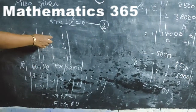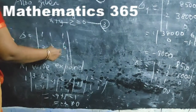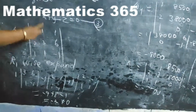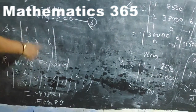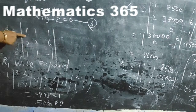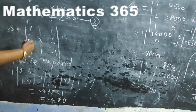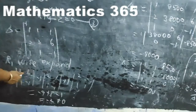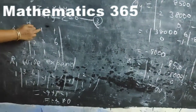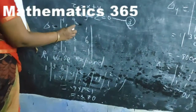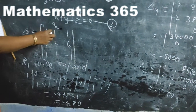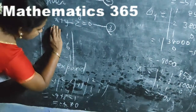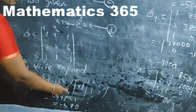Usually we expand along R1. It is plus 1 into the submatrix, removing that row and column: 3, 6; 1, minus 1. The second element, A12 position is an odd number so the sign alternates: plus, minus, plus, minus. Simplify the row and column submatrices accordingly.